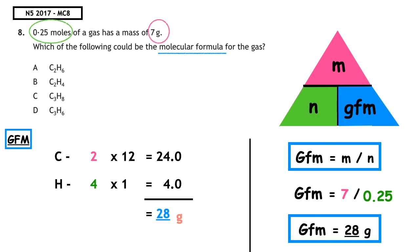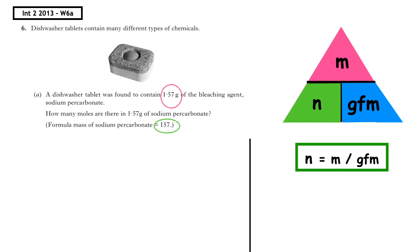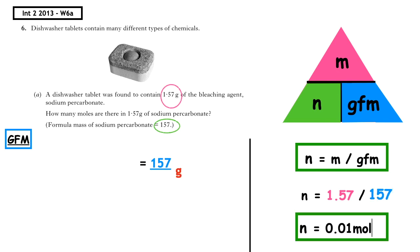This question is from the Intermediate 2 2013 written paper (Q6a). A dishwasher tablet was found to contain 1.57 grams of the bleaching agent sodium percarbonate. How many moles are in 1.57 grams of sodium percarbonate, given a formula mass of 157? We write: n = m ÷ GFM = 1.57 ÷ 157 = 0.01 moles.